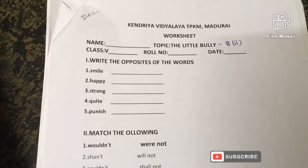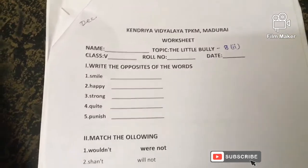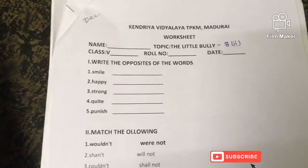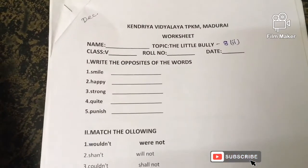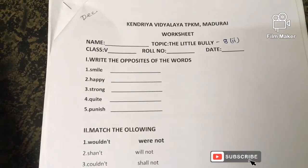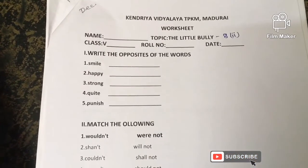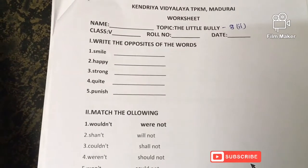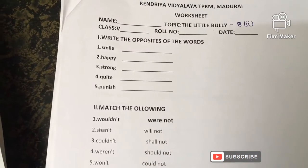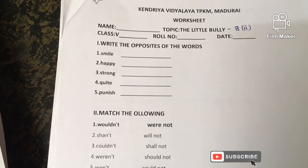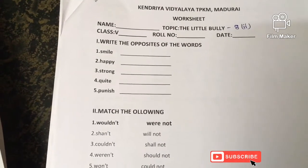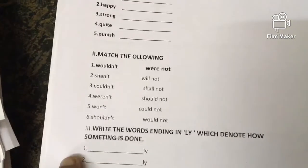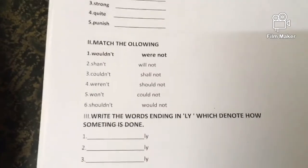Happy — opposite is sad. Strong — opposite is weak. Quite — opposite is noisy. Punish — opposite is reward. Now match the following.